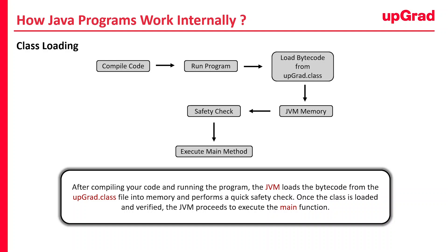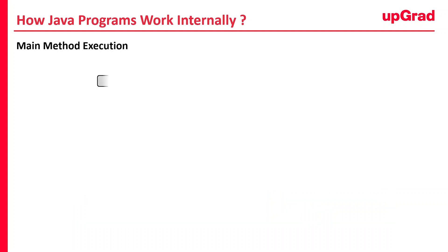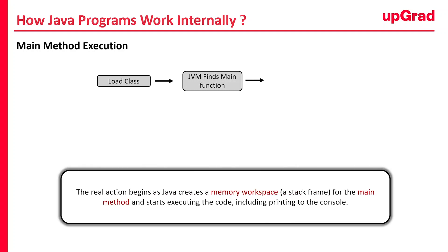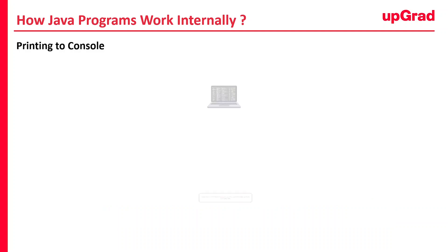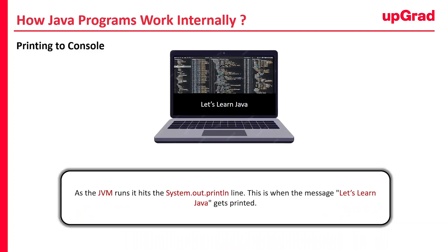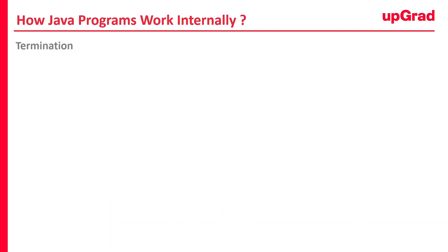With the class loaded and everything checked, it's time for the main event — executing the main method. The JVM looks for the main method we talked about earlier. Java creates a little workspace in memory called a stack frame for the main method and starts running the code inside it. As the main method runs, it reaches the part where we print something to the console. The JVM hits the System.out.println line, and this is when the message "Let's learn Java" gets printed on the screen. Once everything is printed and done, the program finishes up — that is termination.